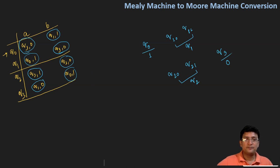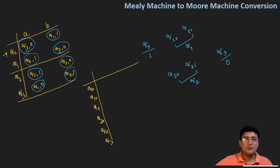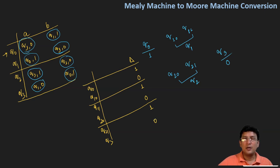Now let's draw the table. The states will be q0, q10, q11, q20, q21, and q3. The outputs associated with these states are: q0 outputs one, q10 outputs zero, q11 outputs one, q20 outputs zero, q21 outputs one, and q3 outputs zero. Now it is the turn to show what the transitions will be on taking the different symbols.